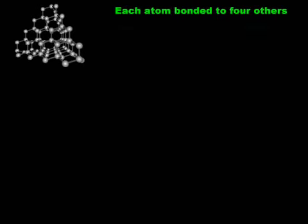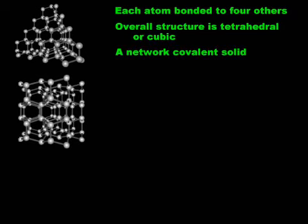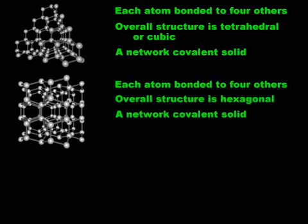Let's take a moment to review. In the diamond structure, each carbon is connected to four others in a tetrahedral arrangement. The resulting structure can be viewed as tetrahedral or cubic, depending upon your perspective. Diamond is a network covalent solid, which means that it has covalent bonds that extend throughout the structure in three dimensions. Lonsdaleite is the hexagonal form of diamond. As in diamond, each carbon atom is connected to four others in a tetrahedral arrangement. However, these tetrahedra are arranged to give a hexagonal or six-sided structure. Like diamond, Lonsdaleite is a network covalent solid.